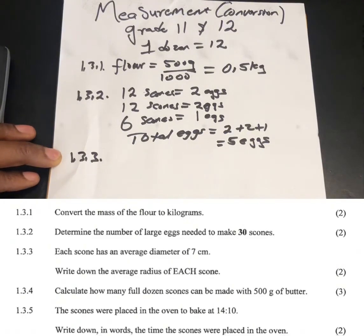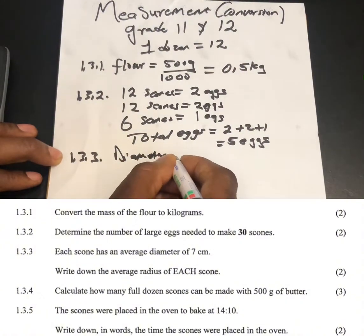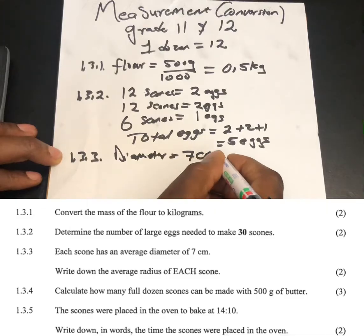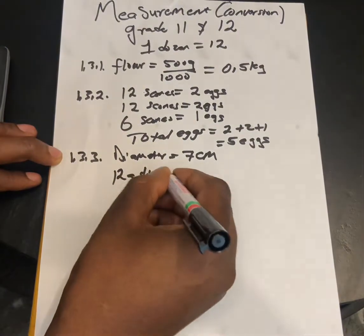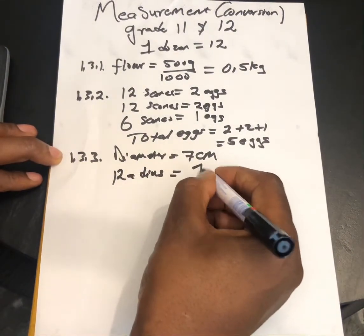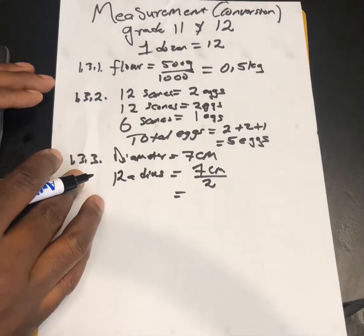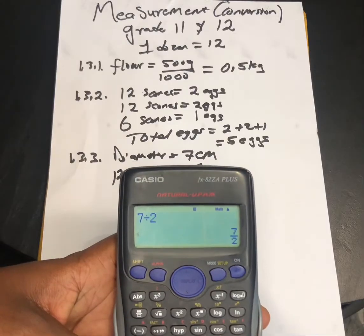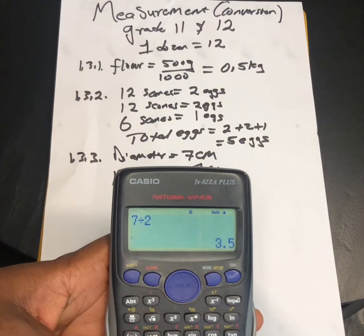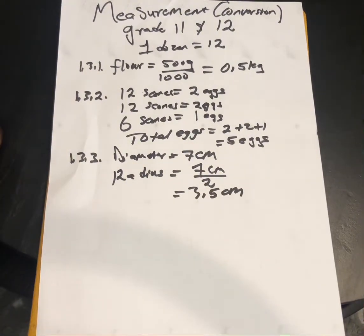Question 1.3.3: each scone has an average diameter of 7 centimeters. They want us to write down the average radius. The radius is the diameter divided by 2, so 7 divided by 2 equals 3.5 centimeters.